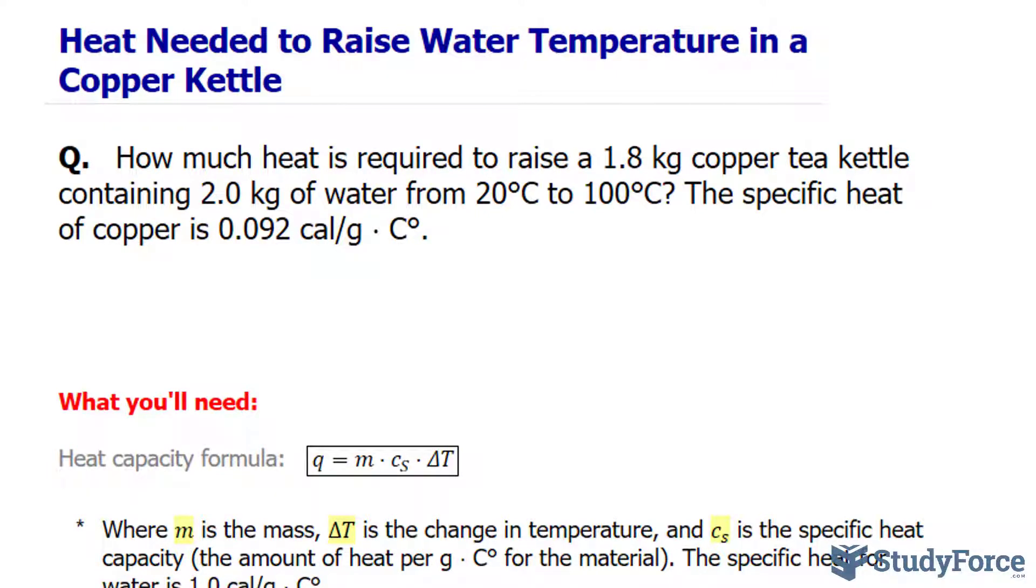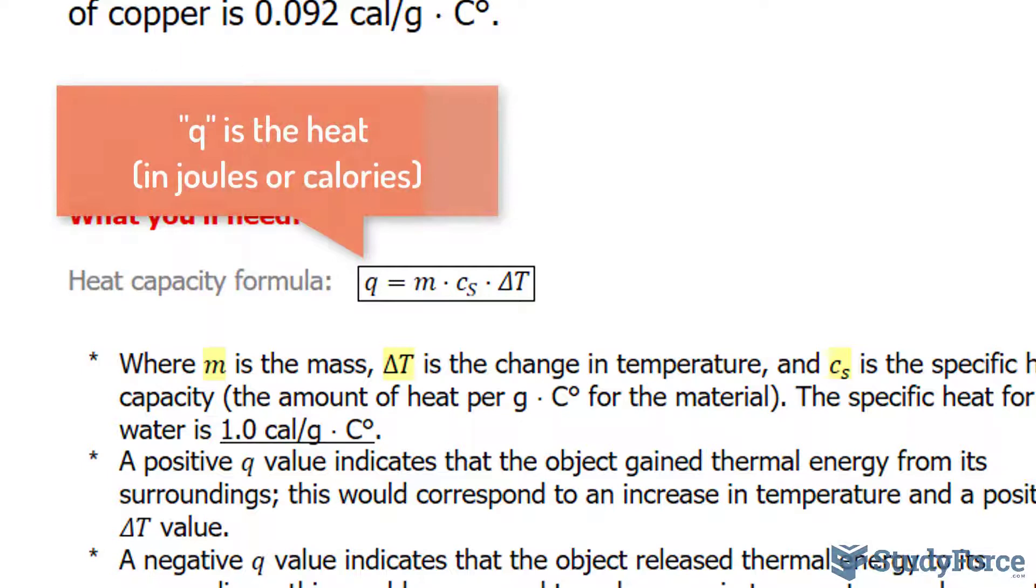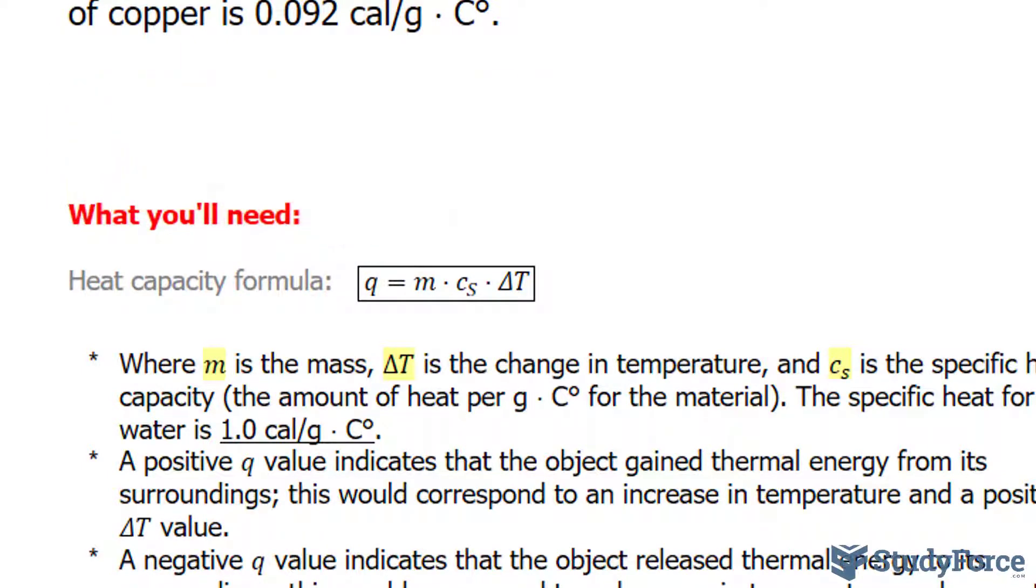And to do a problem like this, we have to refer to the heat capacity formula, shown underneath on your screen, where Q is equal to m, the mass of the combined copper tea kettle and the water, multiplied to each material's specific heat capacity, which is the amount of heat needed to raise 1 gram of a substance by 1 degree Celsius, multiplied to the difference in temperature, which is 80 in this case.